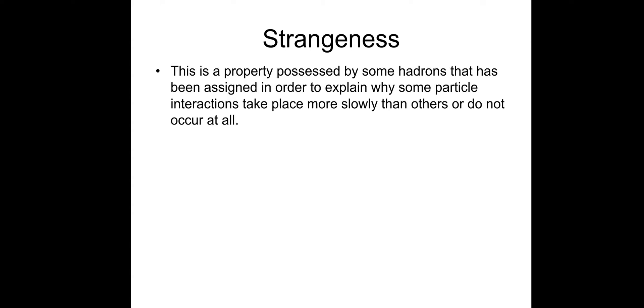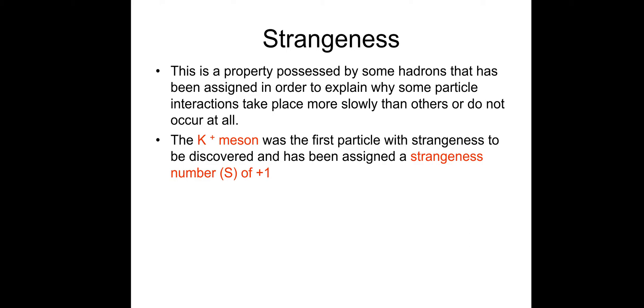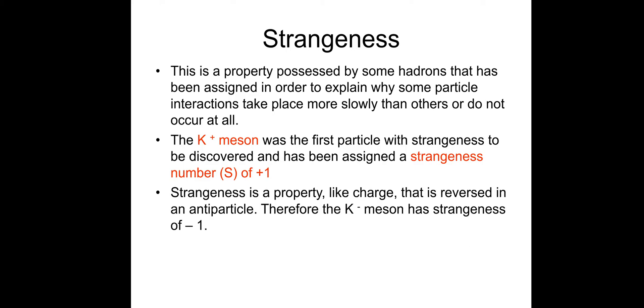Strangeness is a property possessed by some hadrons that's been assigned to explain why some particle interactions take place more slowly than others or do not occur at all. The K plus meson was the first particle with strangeness to be discovered and has been assigned a strangeness number of plus 1. Strangeness is a property, just like charge, that is reversed in an antiparticle. Therefore, the K minus meson has strangeness minus 1.